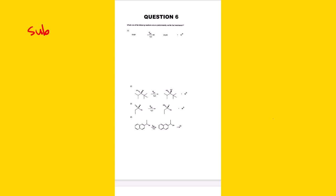From worksheet number one we have question six. The question asks: which one of the following reactions occurs predominantly via the SN2 mechanism? To answer this, we need to refer to the basics of the chapter. The first things to check are the nature of the substrate and the nature of the nucleophile. In an examination, if you are 100% sure about these two properties, go straight to your answer.